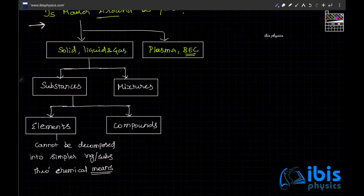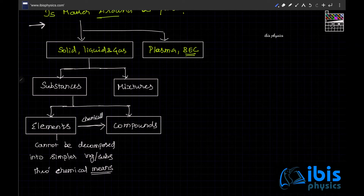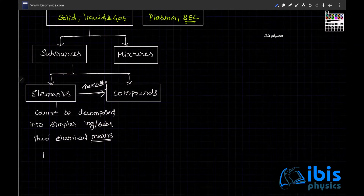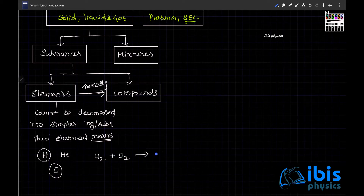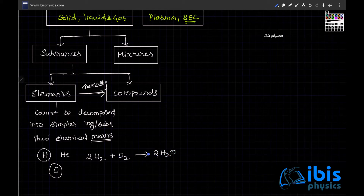Elements combine chemically to form compounds. For example, hydrogen is an element and oxygen is an element, but when we combine hydrogen and oxygen we get a compound called water. So 4 hydrogens and 2 oxygens combine to form 2 water molecules — H₂O is a compound.